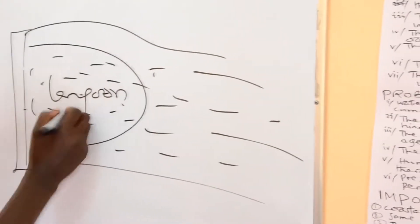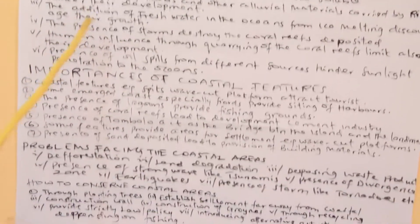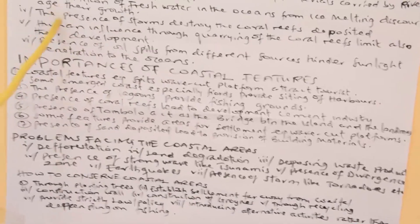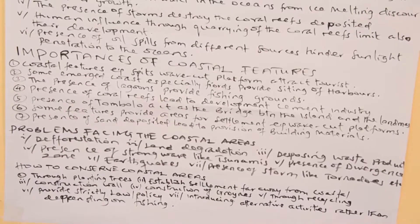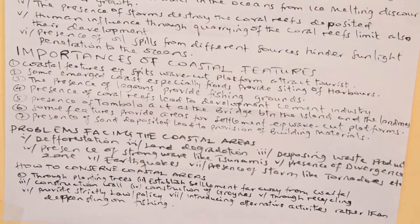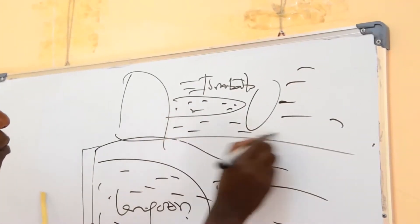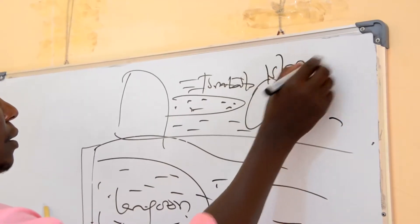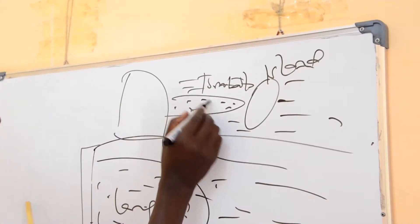Another importance is that a tombolo acts as a bridge between the landmass and the island. You have to remind yourself of the meaning of tombolo — this is a bar of deposited material which exists from the landmass to the island and actually acts like a bridge. Therefore, a person can move from one area to another through this landmass. Another person can move through boats or ships to reach the island. This tombolo is formed by wave deposition, and it enables people to travel through this depositional feature.